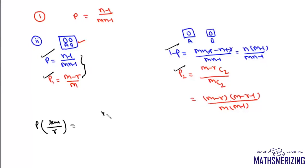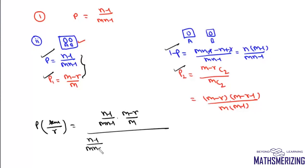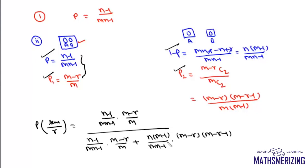Applying Bayes theorem, the numerator is P(together) × P(not in r purses | together) = (n-1)/(m(n-1)) × (m-r)/m. The denominator adds P(separate) × P(not in r purses | separate) = n(m-1)/(m(n-1)) × (m-r)(m-r-1)/(m(m-1)). The (m-1) terms cancel, and m(n-1) also cancels across numerator and denominator.